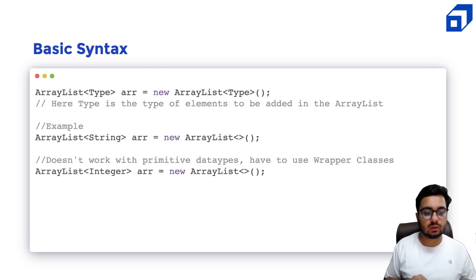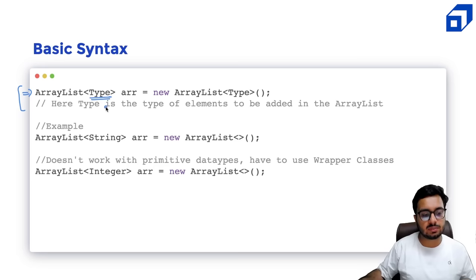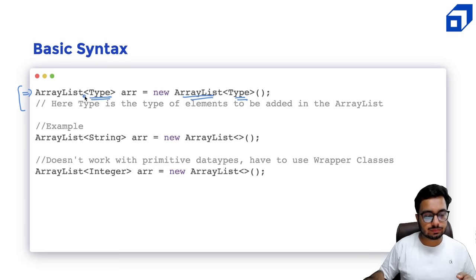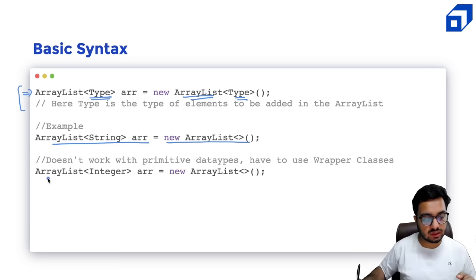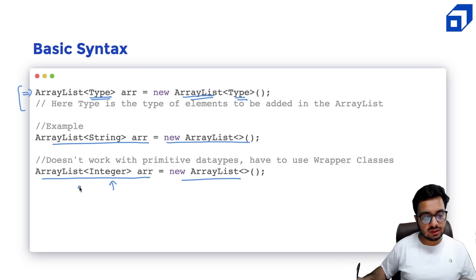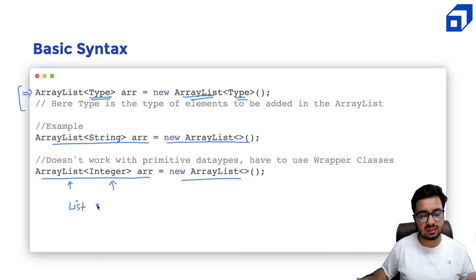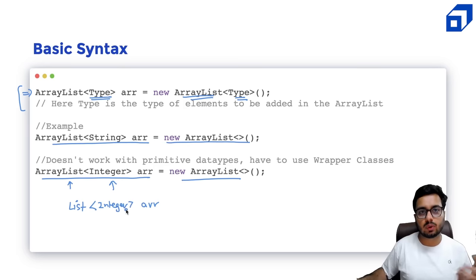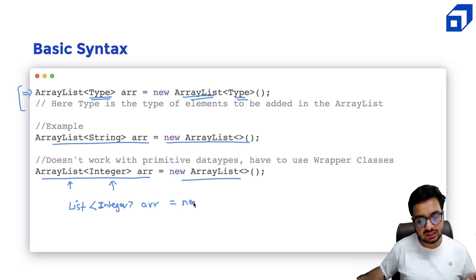Another property: ArrayList is object-based — it can only store object data types and cannot be used with primitive data types like int or float. To create an ArrayList of integers, you use the wrapper class Integer. Also, ArrayList is not synchronized — it is not a concurrent data structure. If concurrency is important for your application, you should use Vector, which is the synchronized version of ArrayList. ArrayList operations are not thread-safe and multiple threads should not operate on the same ArrayList.